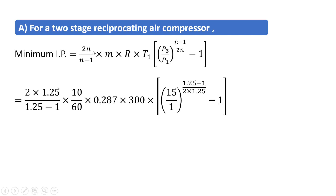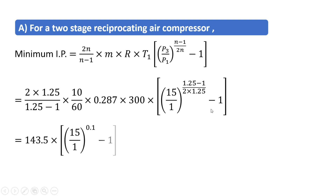Substituting the respective values: n = 1.25, mass flow rate = 10/60 kg/s, R = 0.287 kJ/kg·K for air, T1 = 300 K, P3/P1 = 15/1, and the exponent (n−1)/2n = (1.25−1)/(2×1.25) = 0.1. After calculations, the indicated power for the two-stage compressor comes out to be 44.631 kW.